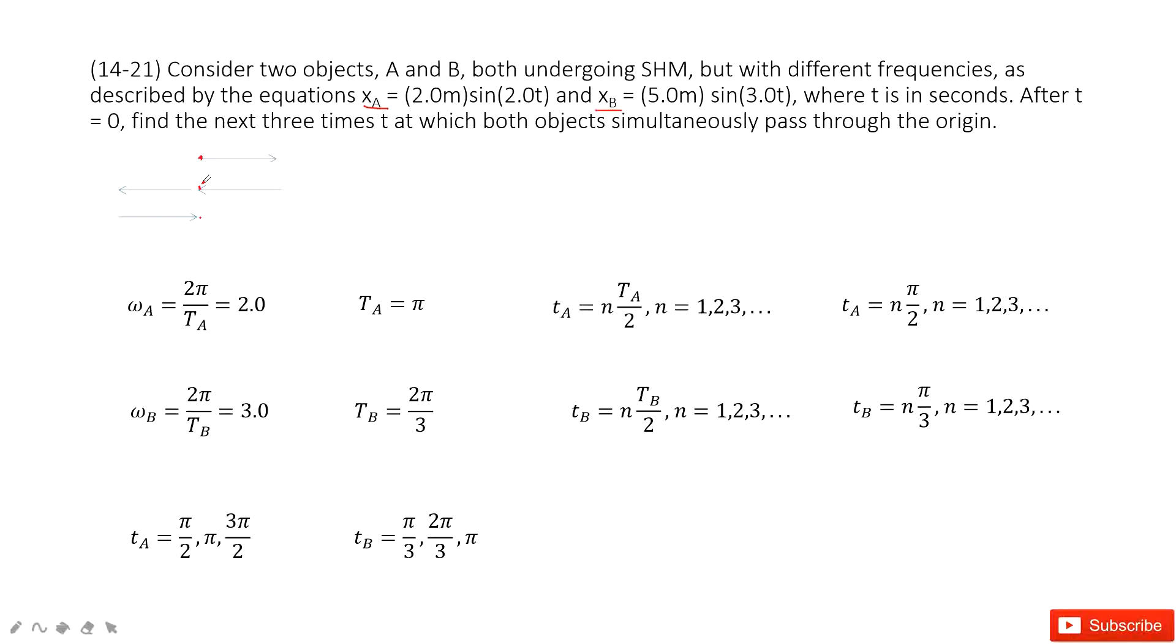The time interval is half a period. You can see this is a total period. But at this time it's at the origin, and at this time it's at the origin. So between these two is half of the period, and between these two is also half of the period. That means every half period, the object goes through the origin.